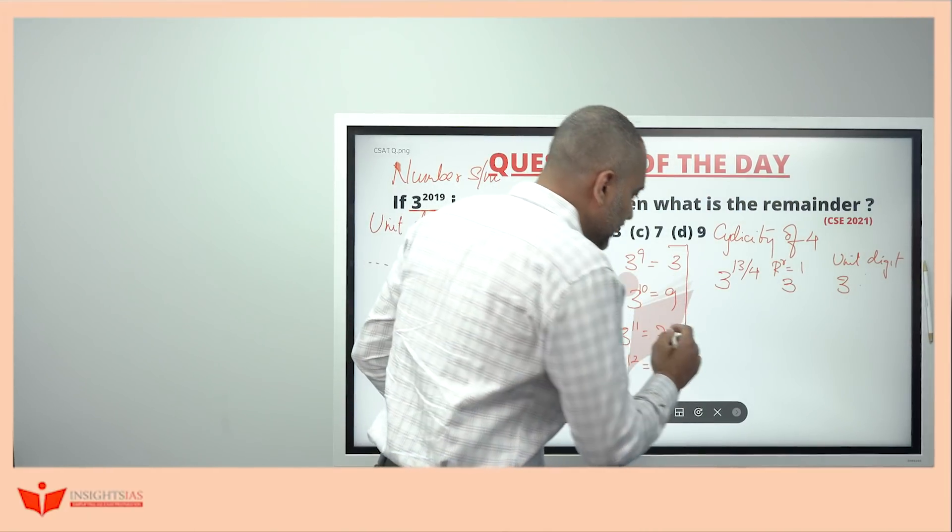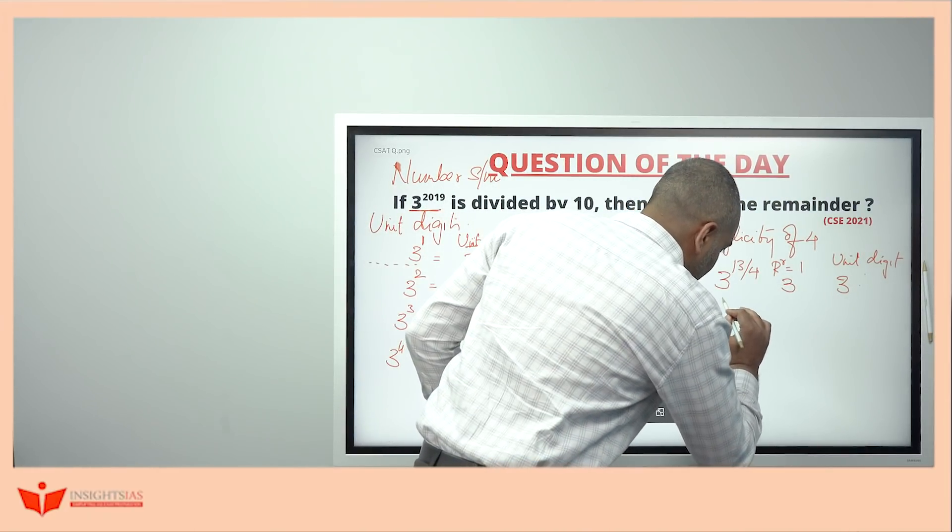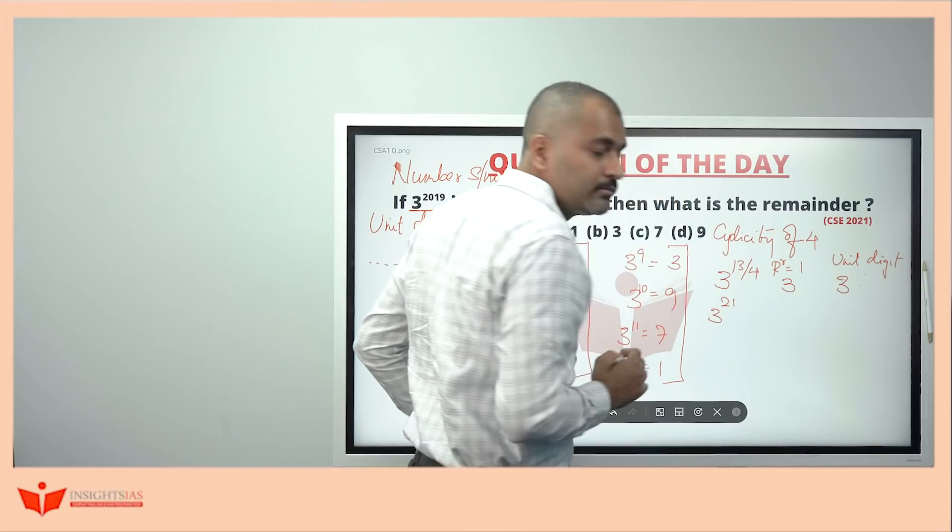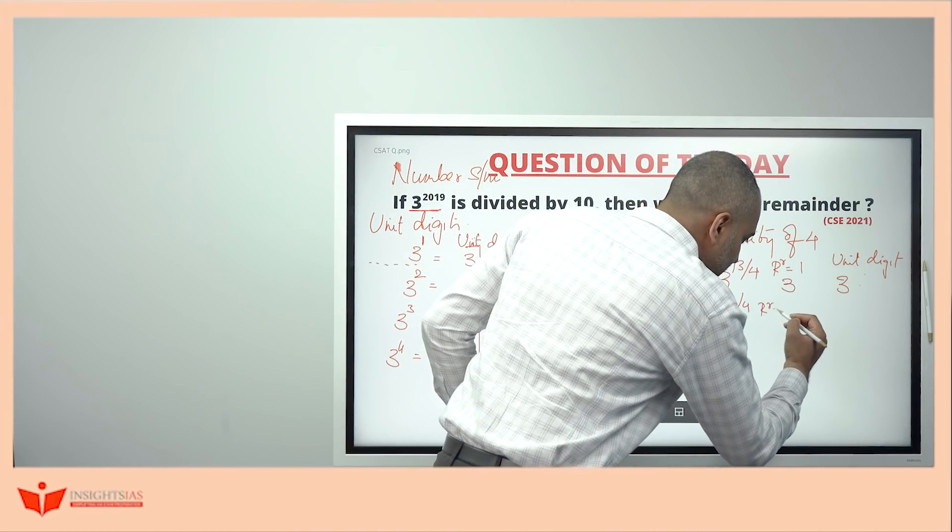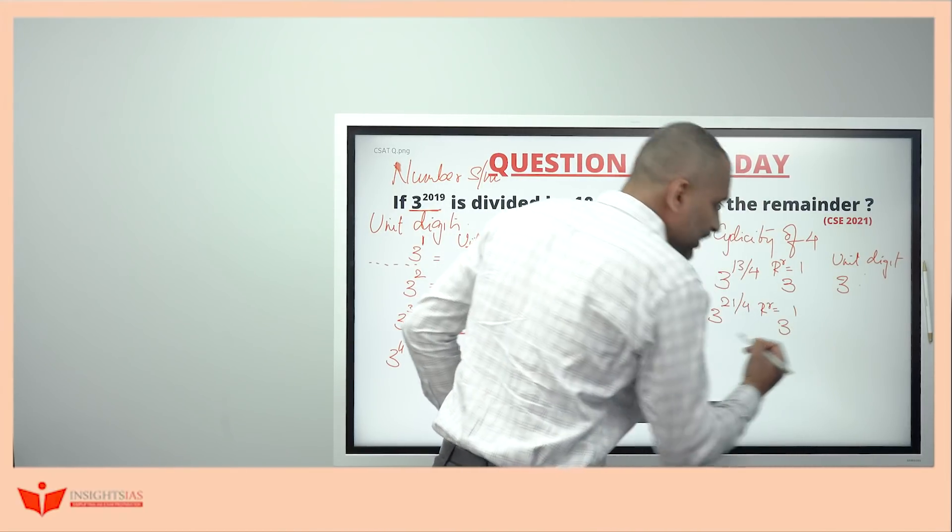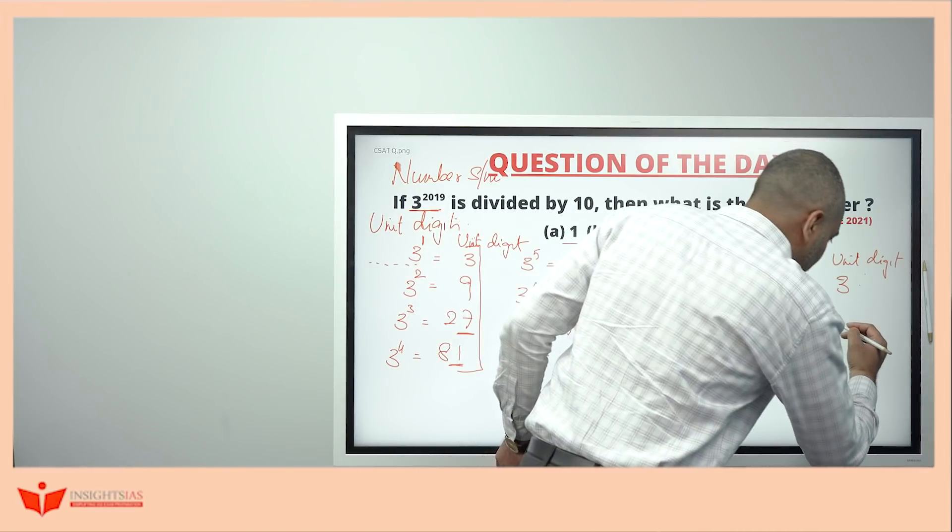I will give one more example. Let us take 3 power 21. When you divide this by 4, the remainder in this case is again 1. So, take this as 3 power 1. 3 power 1 is 3.